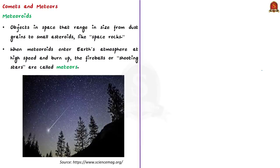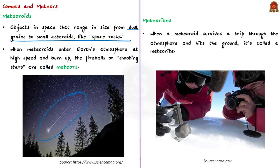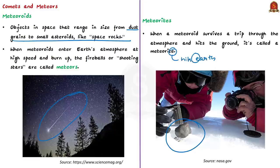Meteoroids are objects in space ranging in size from dust grains to small asteroids — think of them as space rocks. When meteoroids enter Earth's atmosphere at high speed, they burn up; the fireballs or shooting stars are called meteors. When a meteoroid survives its trip through the atmosphere and hits the ground, it's called a meteorite. This concludes the analysis of the OSIRIS-REx mission article.